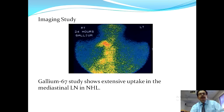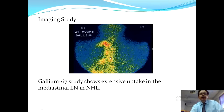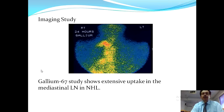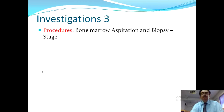A gallium study shows extensive uptake in mediastinal lymph nodes in non-Hodgkin lymphoma — the increased reddish uptake on a yellow background is very helpful in diagnosing chest lesions of NHL.